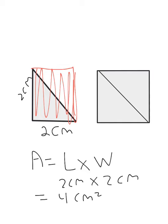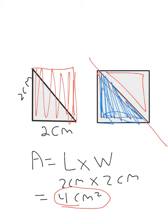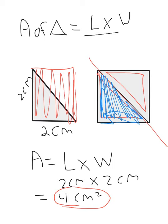Something you might realize, if you've ever done origami, is that a square is actually two triangles together. So what if we took this measurement we came up with and just split it in half? Then we would get the area of just this one half of the square. So if we think of one half, we're splitting one into two pieces — we divide it by two.